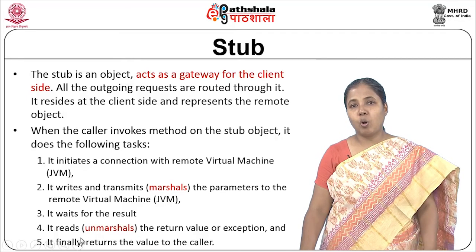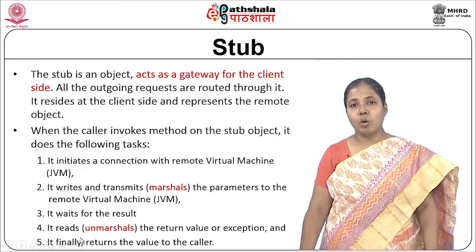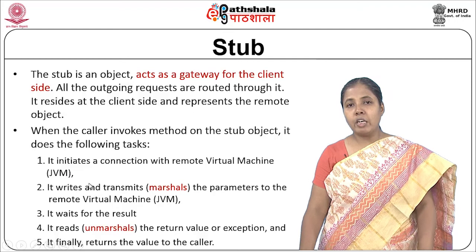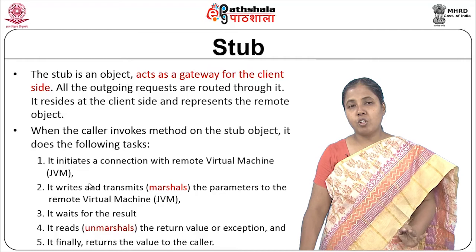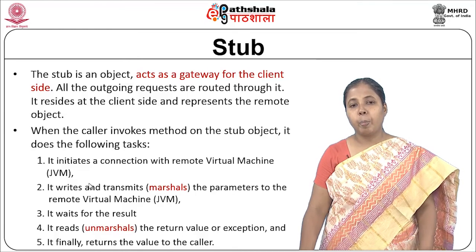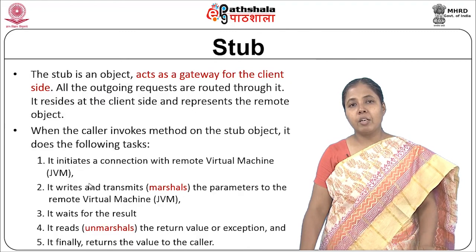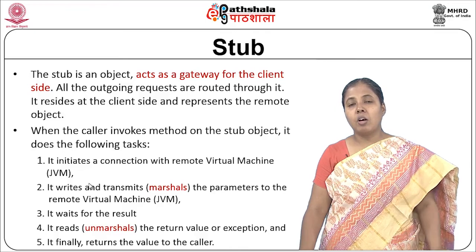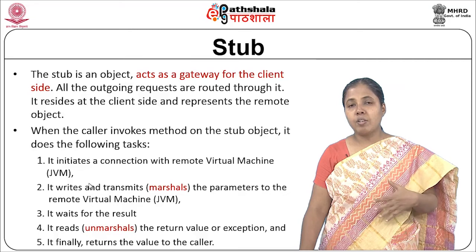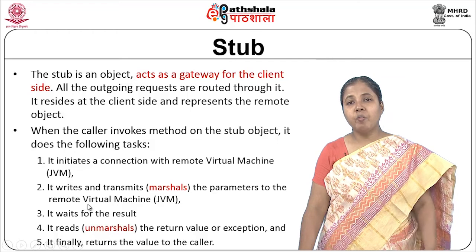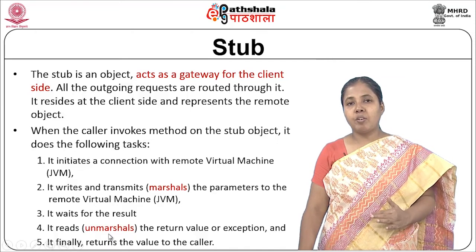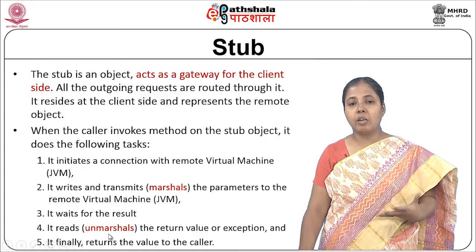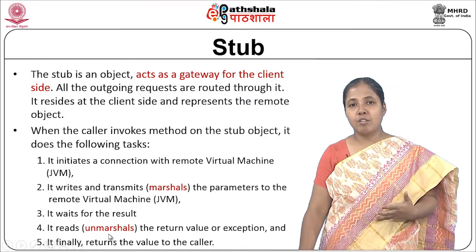When the caller invokes a method on the stub object, it initiates the following operations. First, the client stub initiates a connection with the remote virtual machine — which can be in the local machine or a remote server. In the second step, it writes and transmits the parameters to the remote JVM through marshalling. The client stub then waits for the result. Once the server completes the process and sends back the results, the client stub reads and unmarshals the written values, or handles any exception, and finally returns the results to the caller process.